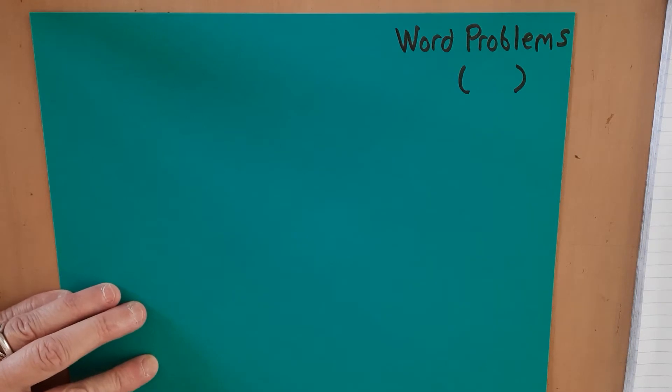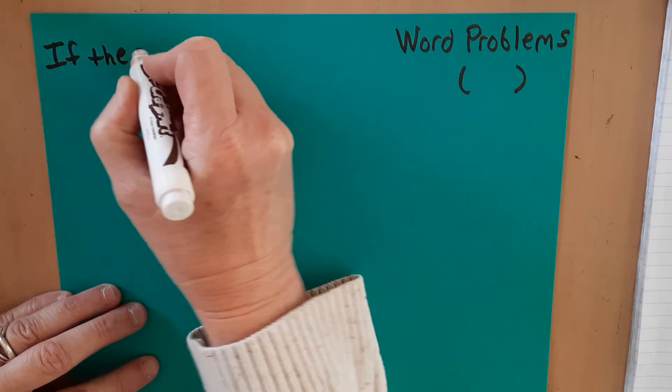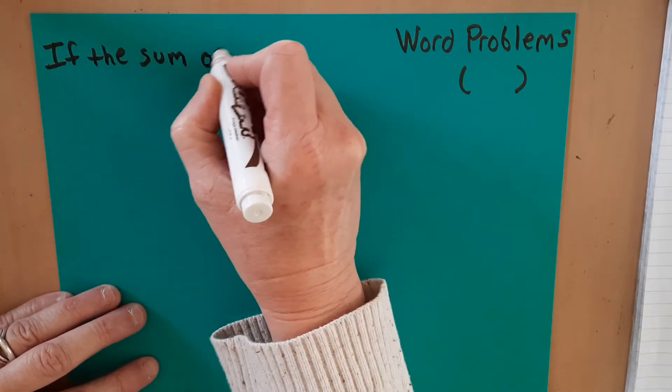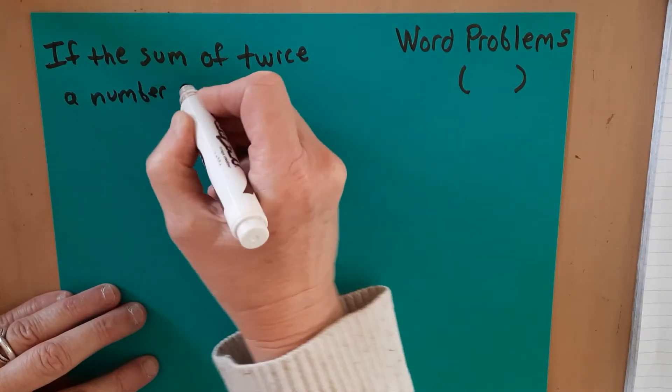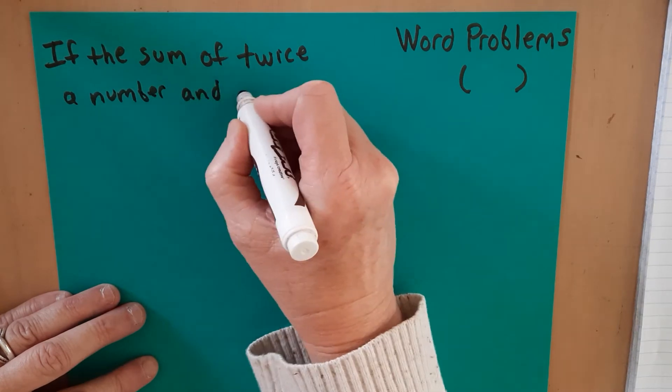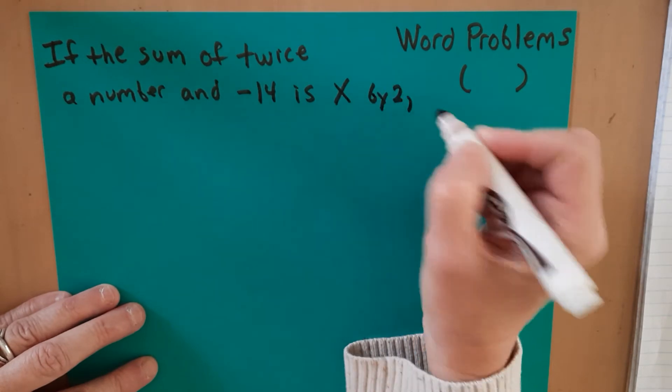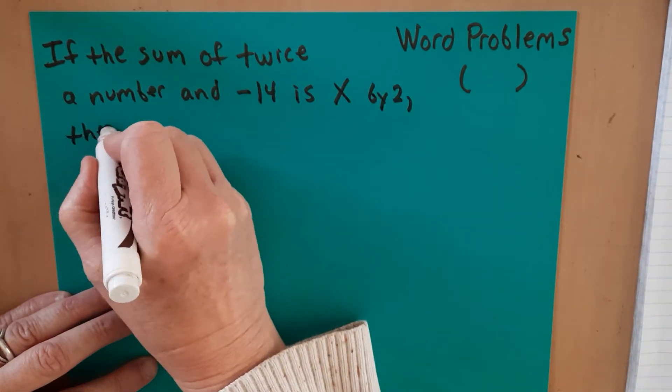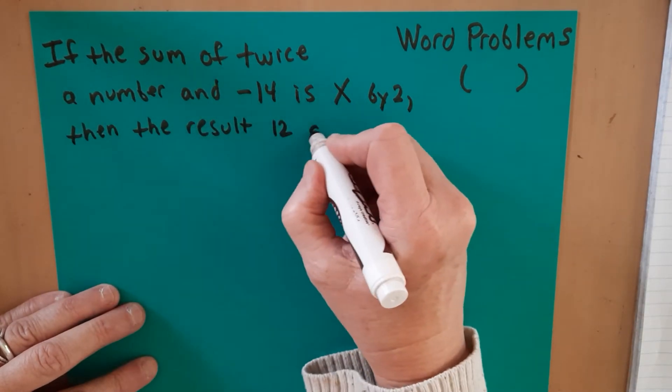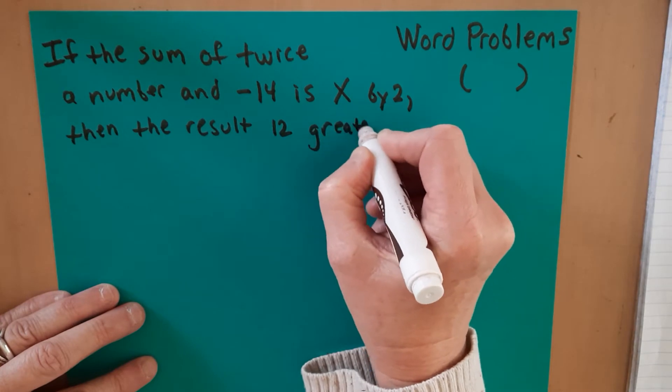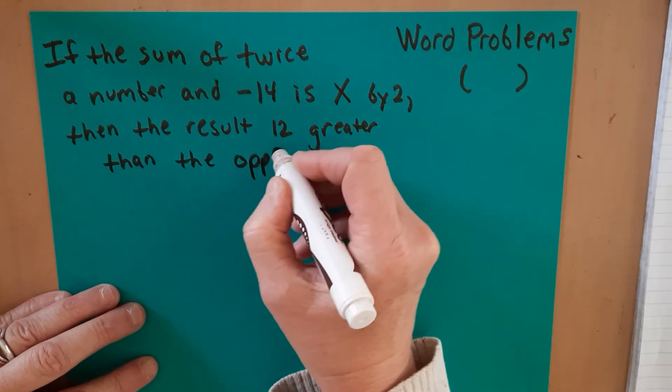So let's say I had the problem: if the sum, which means adding, the sum of twice a number and negative 14 is multiplied by 2, then the result is 12 greater than the opposite of that number.